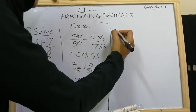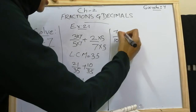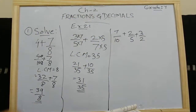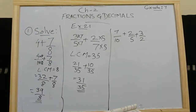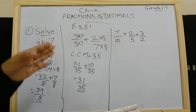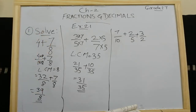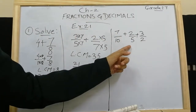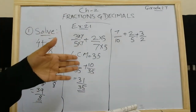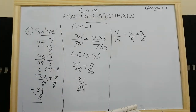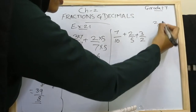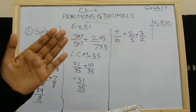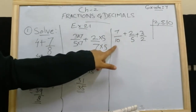The fifth question is 7 by 10 plus 2 by 5 plus 3 by 2. All three denominators are different: 10, 5, and 2. We have to take the LCM. Here we can see that in 2's table there is 10, and in 5's table there is also 10. So automatically you can understand the LCM is 10. In 2's table there is 10 and in 5's table there is 10, so 10 is the LCM.